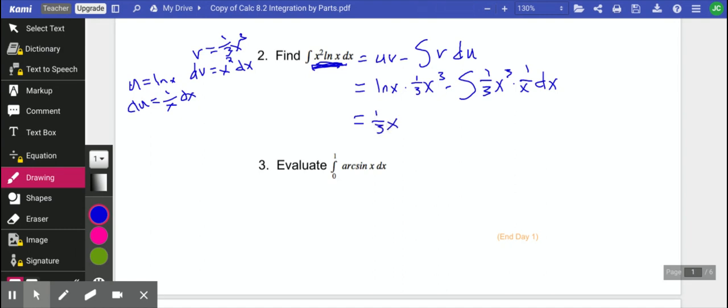I'm just going to rewrite this the other way. 1 third x cubed natural log of x minus, I'm going to pull that 1 third out. And then we have x cubed over x, which is x squared.